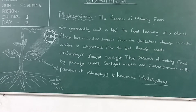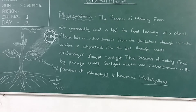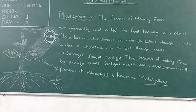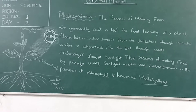The plant takes in carbon dioxide from the atmosphere through the stomata. Water is absorbed from the soil through the roots. In the presence of sunlight, it is a process in which green plants use sunlight to make their own food.